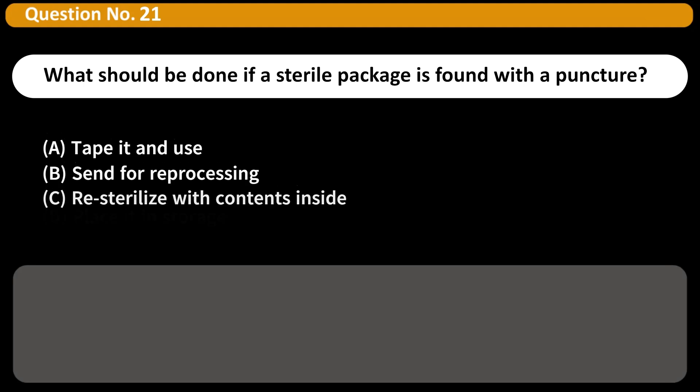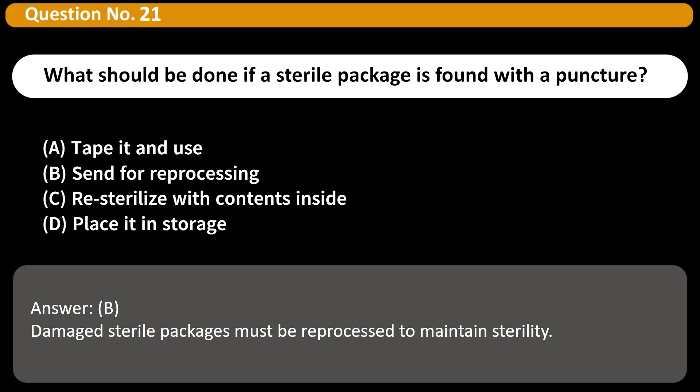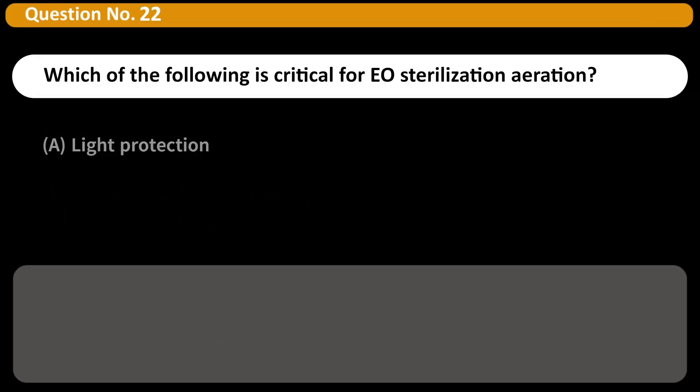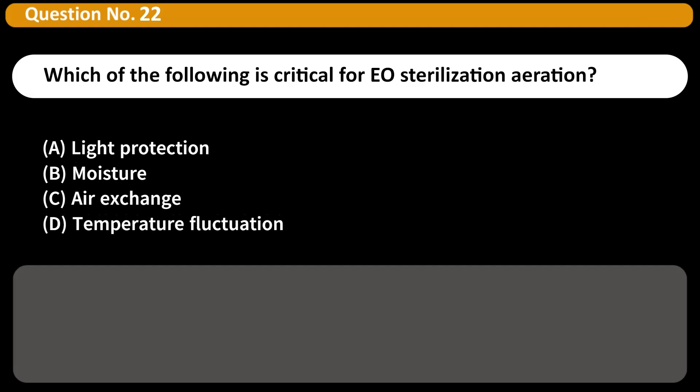What should be done if a sterile package is found with a puncture? A. Tape it and use, B. Send for reprocessing, C. Re-sterilize with contents inside, D. Place it in storage. Answer B. Damaged sterile packages must be reprocessed to maintain sterility.